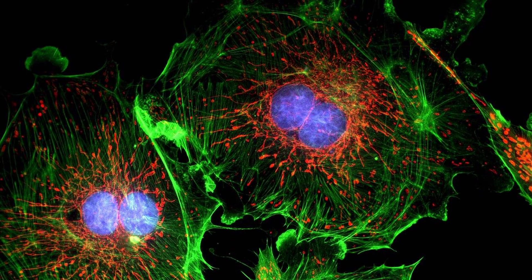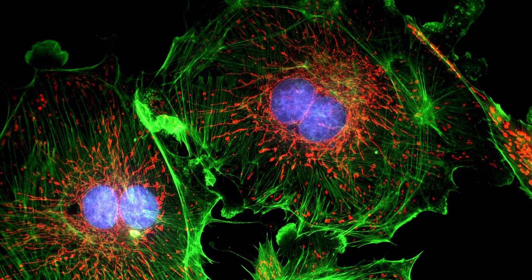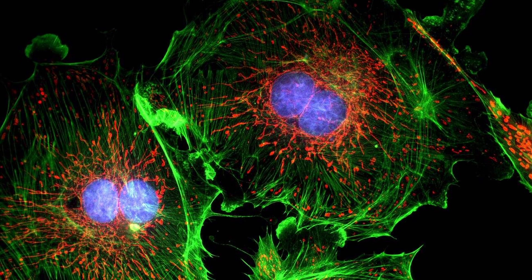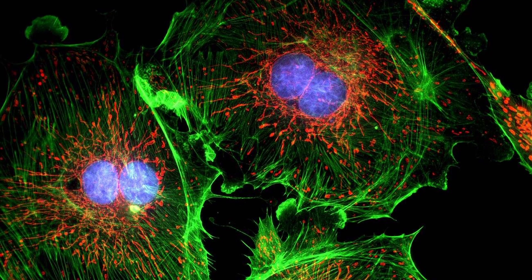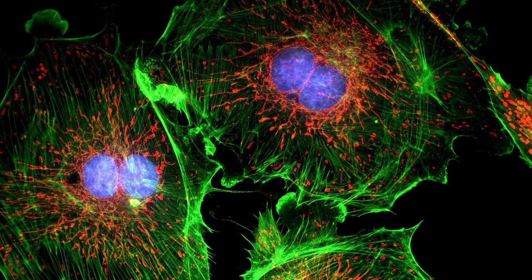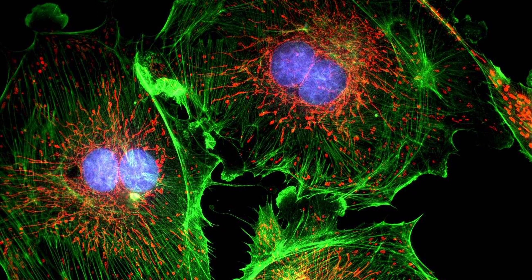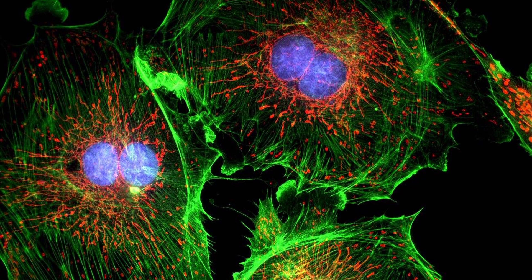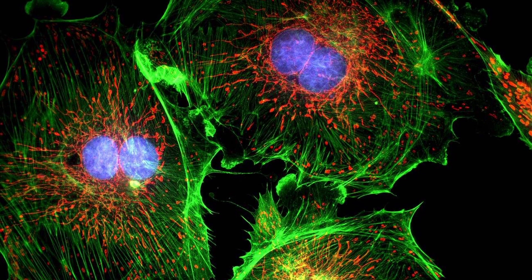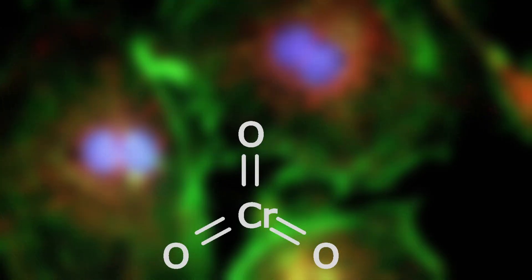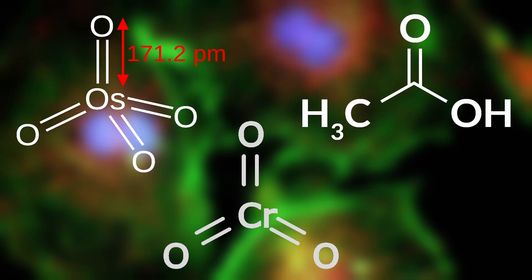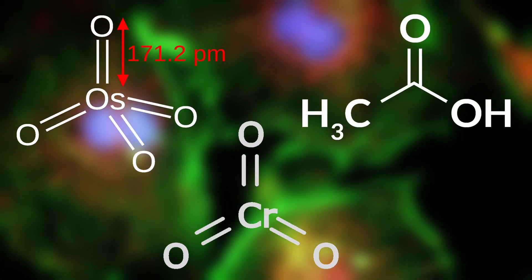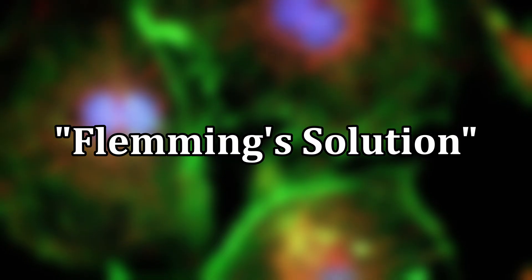Fleming's genius lay with his experimentation with acids to create a certain type of dye capable of highlighting the components in a cell. His most successful mixture included a combination of chromic, osmic, and glacial acetic acids, and came to be known as Fleming's solution.